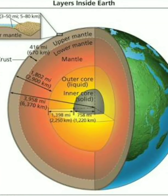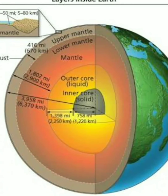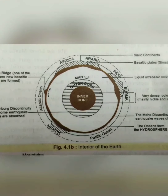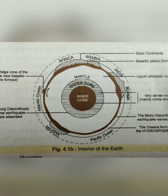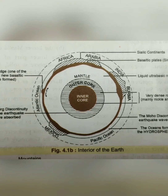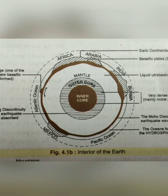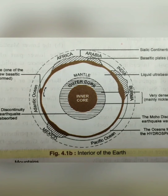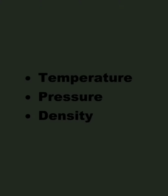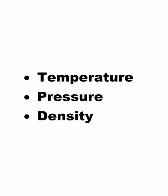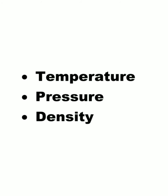All the materials and components inside the earth depend on three things. Before explaining the three layers of the earth, I am going to explain these three things: the first is temperature, the second is pressure, and the third is density. All the properties of the inside of the earth depend on these three things, which are interrelated with the depth of the earth.